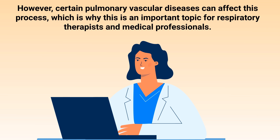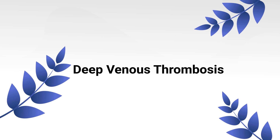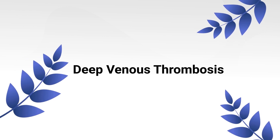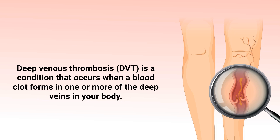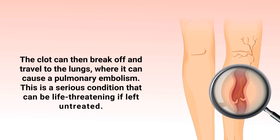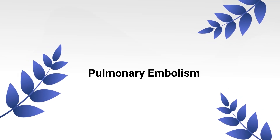First, we have DVT, or deep venous thrombosis. This is a condition that occurs when a blood clot forms in one or more of the deep veins in the body, usually from the legs. The clot can then break off and travel to the lungs where it can cause a pulmonary embolism. This is a serious condition that can be life-threatening if left untreated.